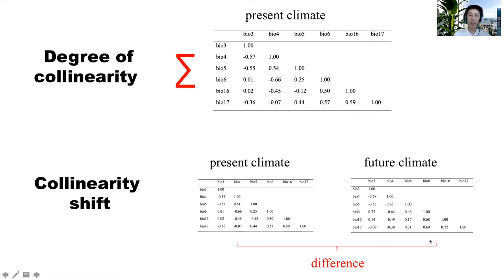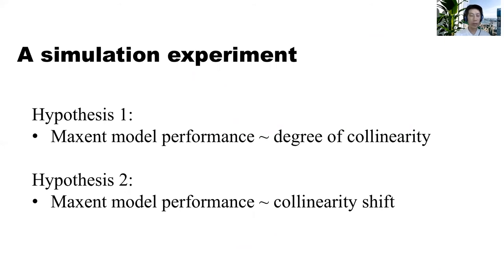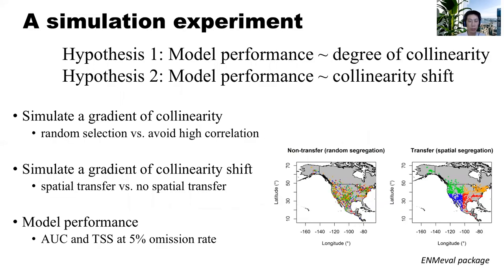Next, I want to talk about a simulation experiment to figure out which of the two aspects matters more. I have two hypotheses: one is that the degree of collinearity can affect the performance of MaxEnt models, and the second is that the collinearity shift can affect the performance of MaxEnt models. We simulated a gradient of collinearity by either randomly selecting variables or avoiding highly correlated variables. We also simulated a gradient of collinearity shift by simulating scenarios of spatial transfer or no spatial transfer. We use AUC and TSS to evaluate the models.